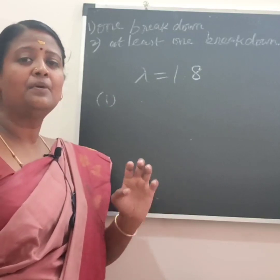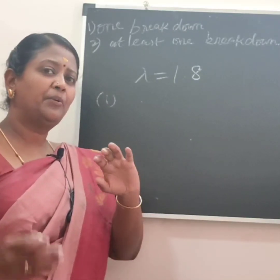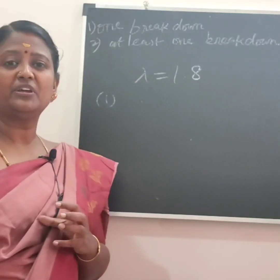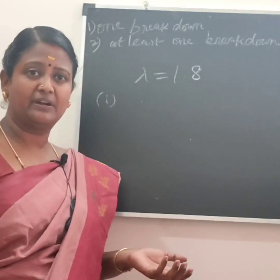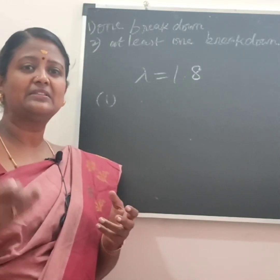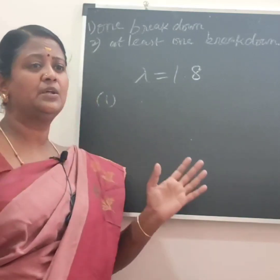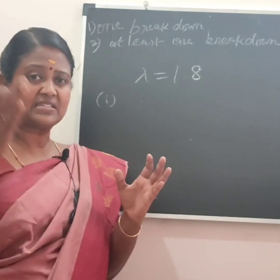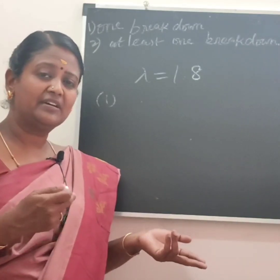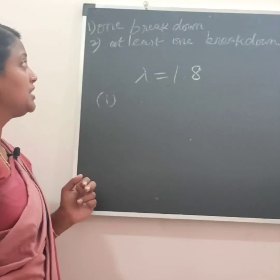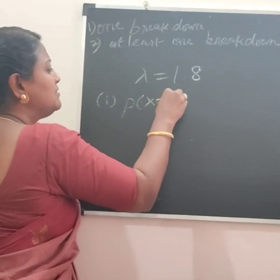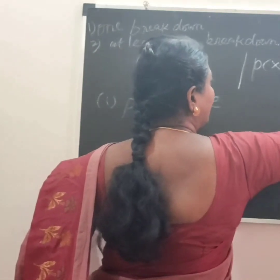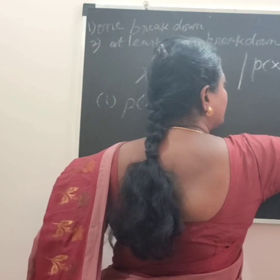Let X be the number of breakdowns in one month. X fits a Poisson distribution with x equal to 0, 1, 2, 3, etc., up to infinity. The probability function is P(x) = e to the power minus lambda, times lambda to the power x, divided by x factorial. For exactly one breakdown, substitute x = 1 and lambda = 1.8: P(X=1) = e to the power minus 1.8, times 1.8 to the power 1, divided by 1 factorial.